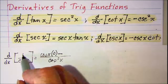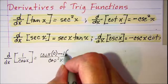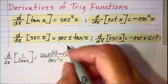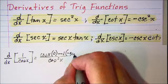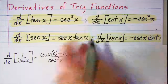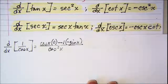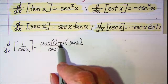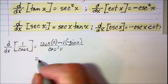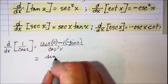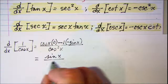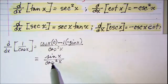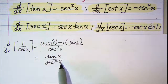Then we subtract the numerator times the derivative of the denominator. The derivative of cosine x is negative sine x. Simplifying, the first term is zero, and negative one times negative sine x gives positive sine x over cosine squared x. We separate cosine squared into cosine x times cosine x.